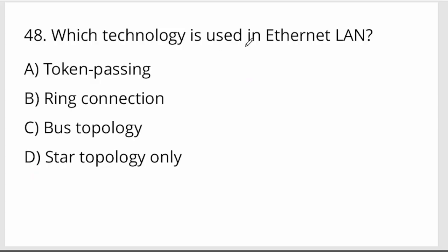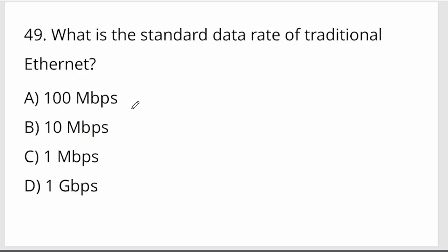Which technology is used in Ethernet LAN? Ethernet LAN uses bus topology technology. Option C. What is the standard data rate in traditional Ethernet? That is 10 Mbps.